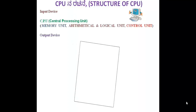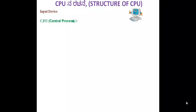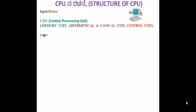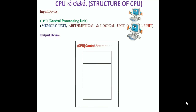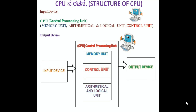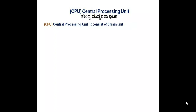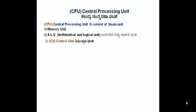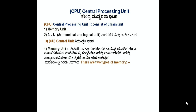Computer CPU — the structure of a CPU includes input devices, the central processing unit (CPU), memory unit, mathematical logic unit (ALU), control unit, and output devices.